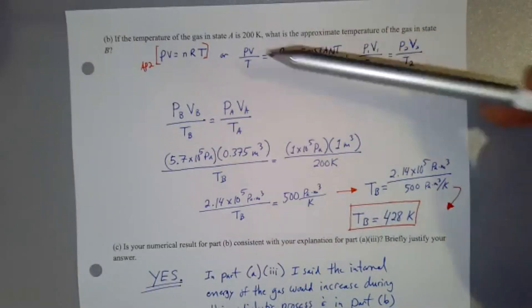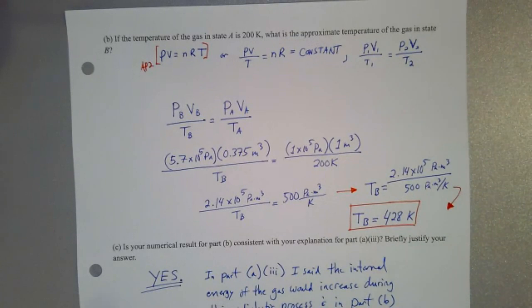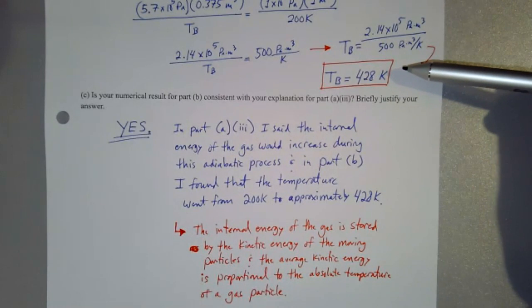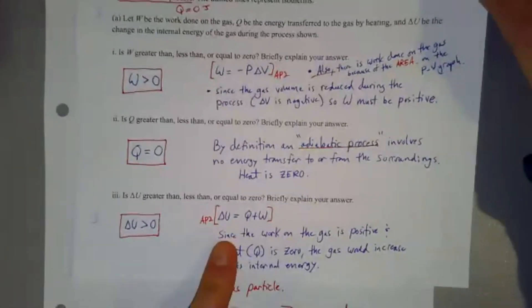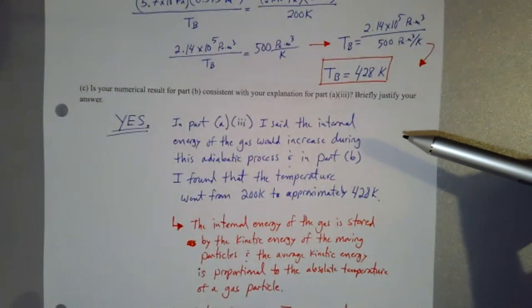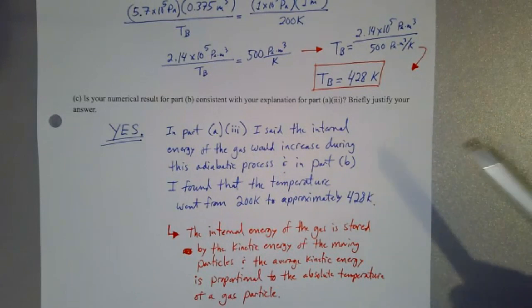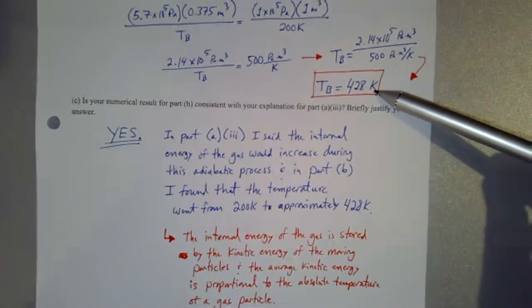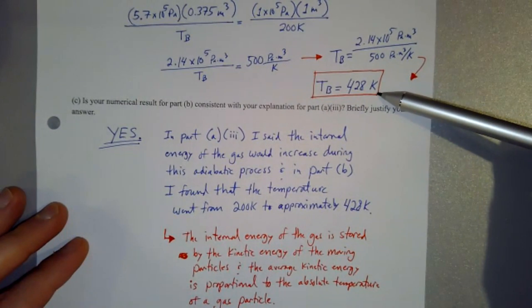There are other ways to use the ideal gas law to get to the same answer, but you end up doing the same thing. The last part asks: is your numerical result for part B consistent with your explanation for part A? Part A concluded the internal energy increases. Here, the temperature increases from 200 K to 428 K. You need to state that it is consistent because if the temperature increases, the internal energy must also increase.